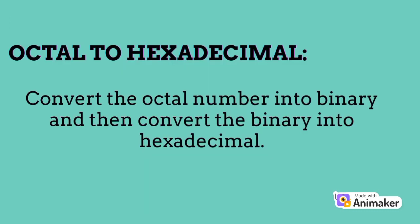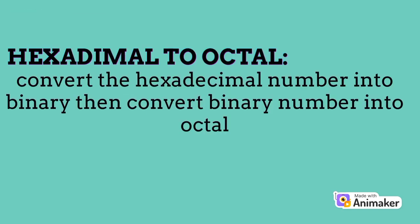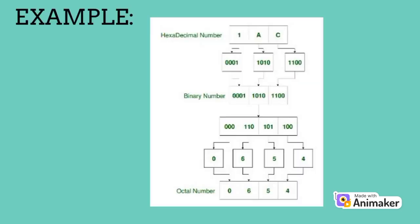Octal to hexadecimal. Convert the octal number into binary, and then convert the binary into hexadecimal. Here is an example showing the conversion. Hexadecimal to octal. Convert the hexadecimal number into binary, then convert the binary number into octal. Here is an example showing the conversion.